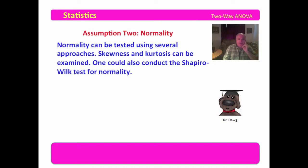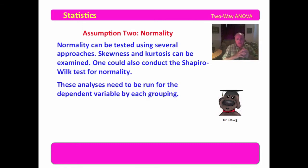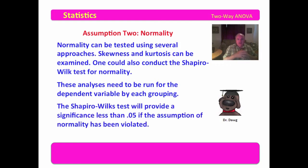Assumption two is normality, and normality can be tested using several approaches. You can examine skewness and kurtosis together — skewness tells us whether it's left or right skewed, and kurtosis tells us whether it's packed in or spread out from the mean. One could also conduct the Shapiro-Wilk test for normality. These analyses need to be run for the dependent variable by each grouping. So if you have two variables with three groupings each, you've got to run six of these. The Shapiro-Wilk test will provide a significance less than 0.05 if the assumption of normality has been violated, using the standard 0.05 level, though you may choose 0.01.